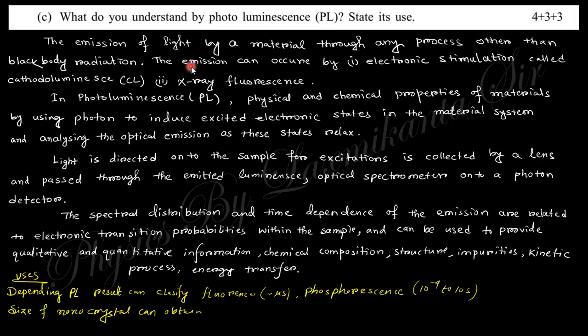Next is: what do you understand by photoluminescence? Photoluminescence means when the material is excited by electronic state, it ejects some lights. It's called photoluminescence. Its use is for fluorescence or phosphorescence obtained from the photoluminescence spectra.